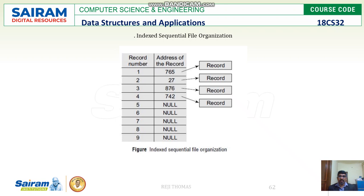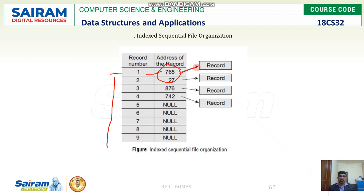Next is indexed sequential file organization. Every record is numbered sequentially, starting from 1 to n, and for every record number it gives you the address of the record. For index record number 1, the address of the record might be 765 where the record is stored. This is an indexed sequential file organization — it is both sequential and indexed — where we have a number for every record and that number stores the address of every record.